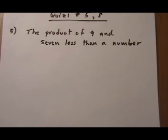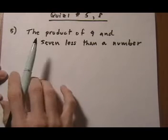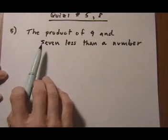Quiz 1 numbers 5 and 8. The first one, number 5, is going from English to algebra. So let's take a look at how we would turn this into an expression.